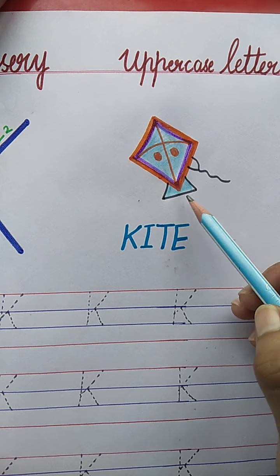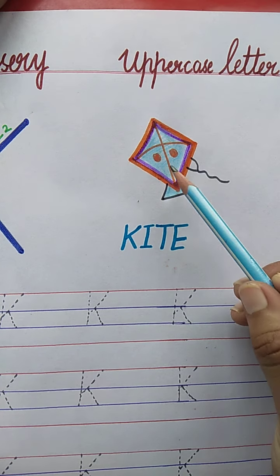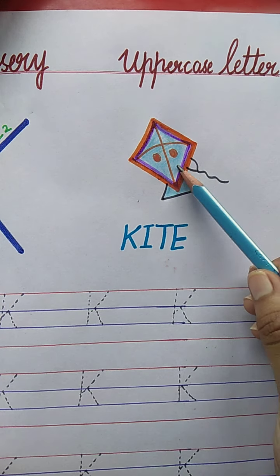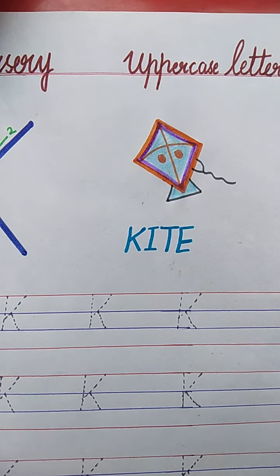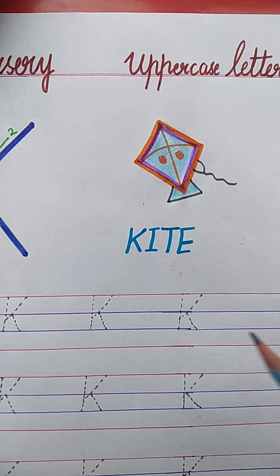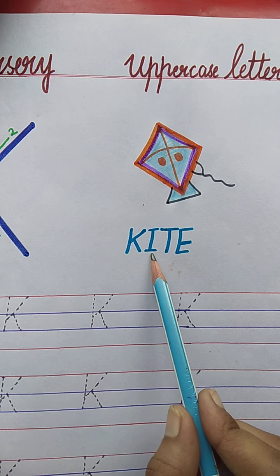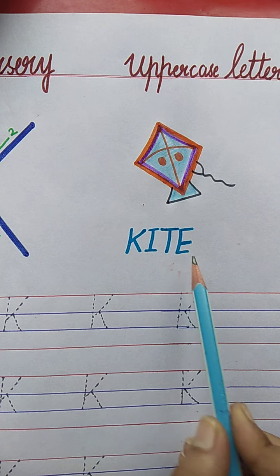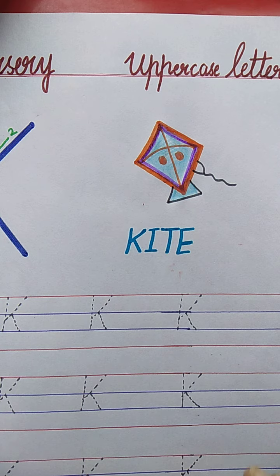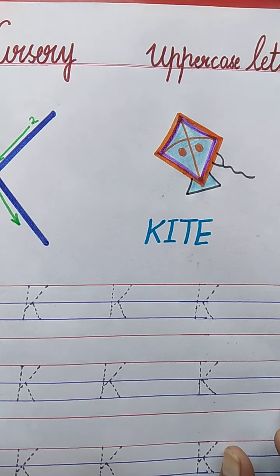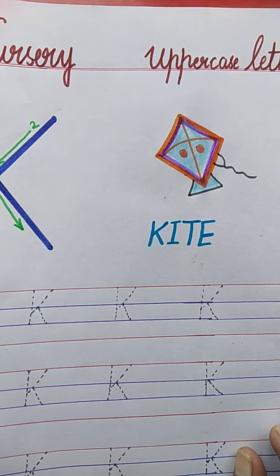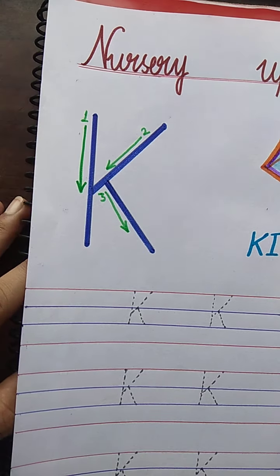See here, this is the kite. Now, the spelling of kite is K-I-T-E. Kite. K-I-T-E. Kite.